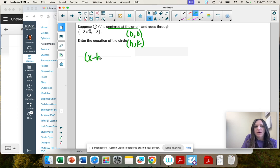Remember we have x minus h squared plus y minus k squared equals r squared. So we just need to find r, that's the radius.